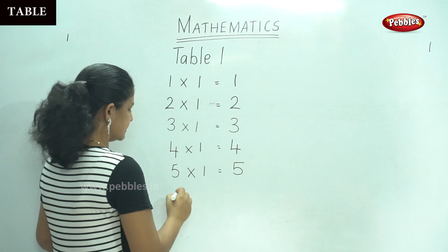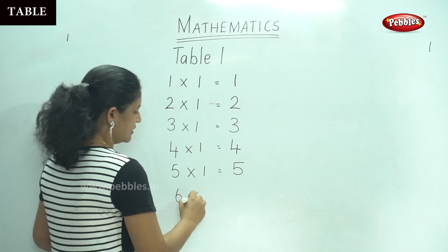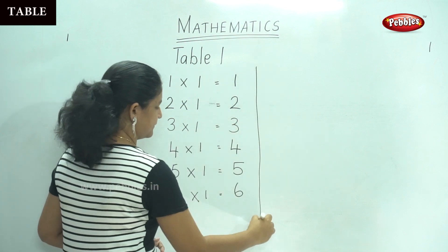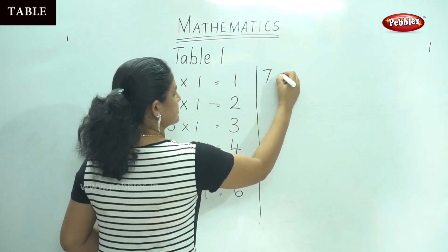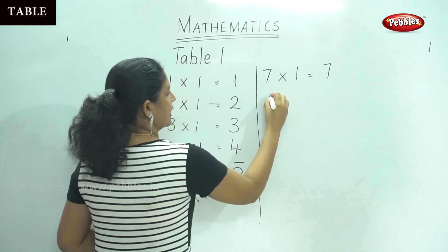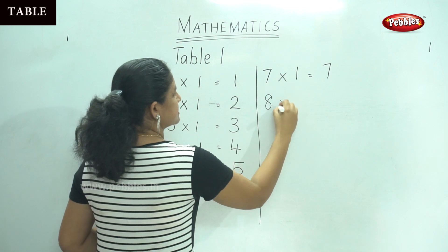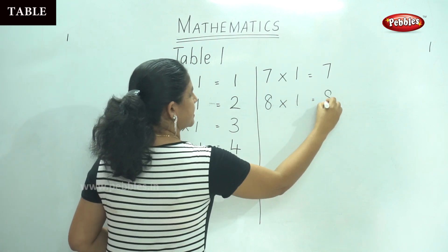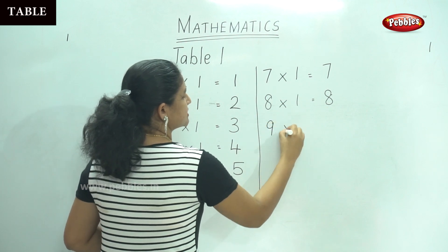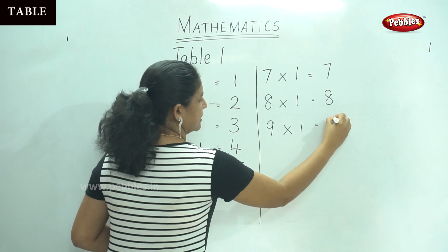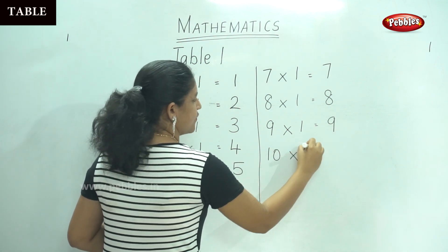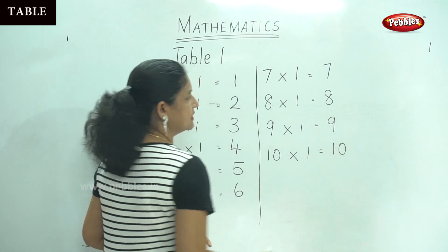6 times 1 will give you 6. 7 times 1 will give you 7. 8 times 1 gives you number 8. 9 times 1 is number 9. And 10 times 1 will give you number 10.